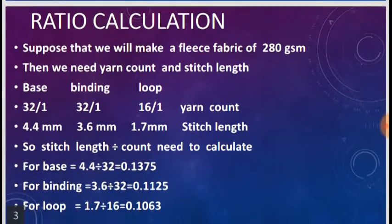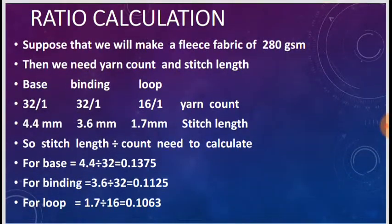Now we come to ratio calculation. Suppose that we will make a fleece fabric of 280 GSM. Then we need yarn count and stitch length: base yarn 32 single, binding yarn 32 single, loop yarn 16 single. Base stitch length 4.40 mm, binding stitch length 3.60 mm, and loop stitch length 1.70 mm.